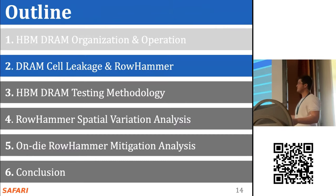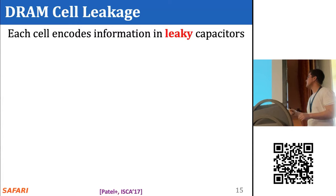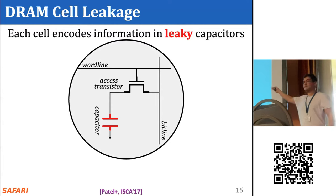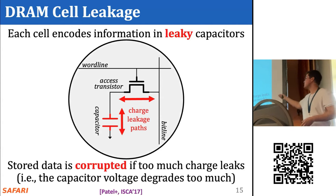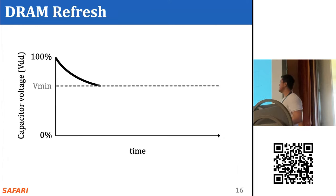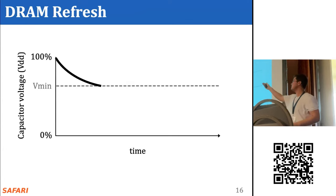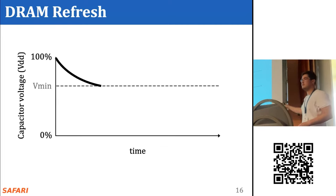Let's look at what's inside the cell — its leakage characteristics and the rowhammer phenomenon in more detail. Each DRAM cell includes fundamentally leaky capacitors. In a simplified diagram, the capacitor in red stores data, and the access transistor determines whether the cell is being accessed. There are many leakage paths through which charge can enter or exit the cell. The stored data becomes corrupted if too much charge leaks — that is, if the capacitor voltage degrades too much.